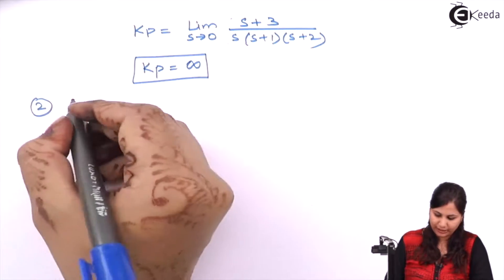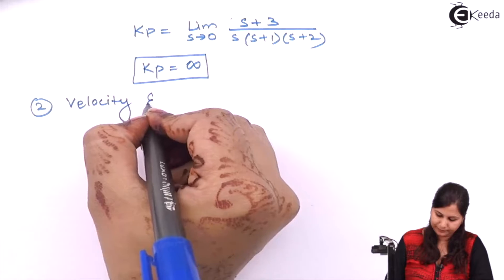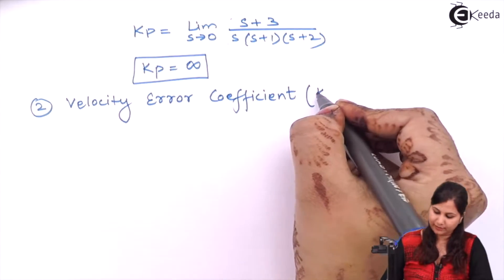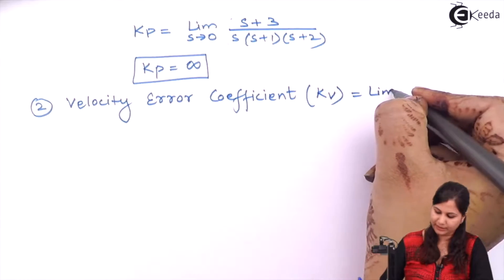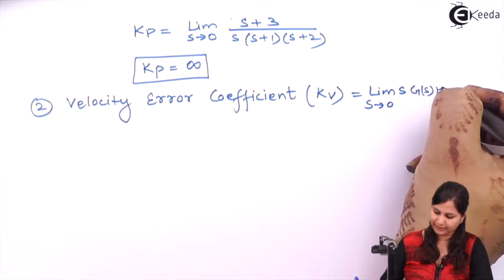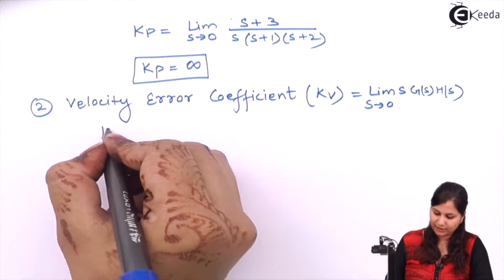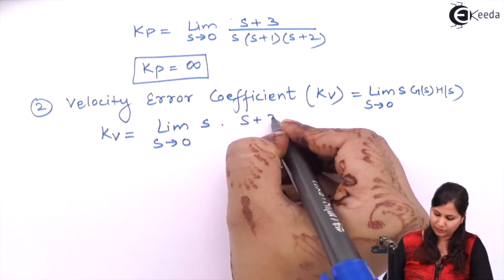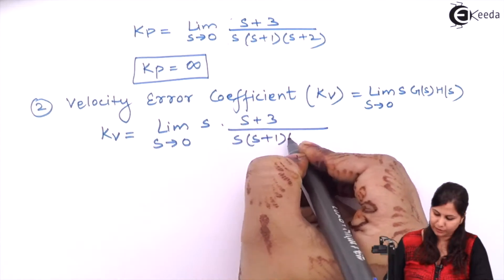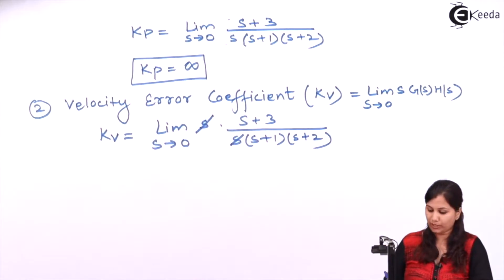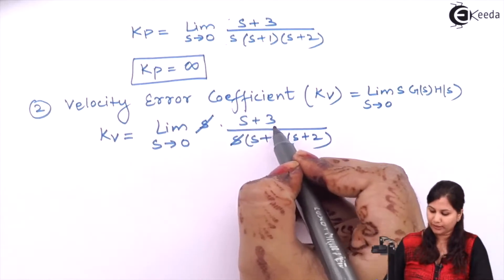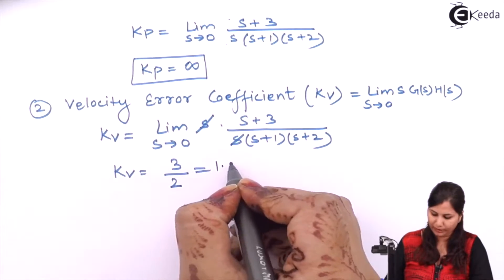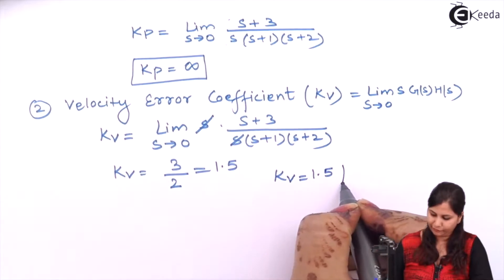The second error coefficient is the velocity error coefficient. It is denoted Kv and its formula is the limit as S tends to 0 of S·G(s)H(s). Substituting, Kv equals limit S tends to 0 of S·(S+3) upon S(S+1)(S+2). The S terms cancel; applying the limit gives 3 upon 1 times 2, that is 3 by 2. So Kv equals 1.5.